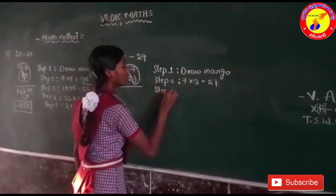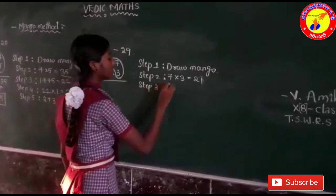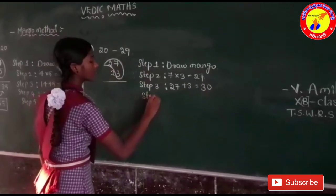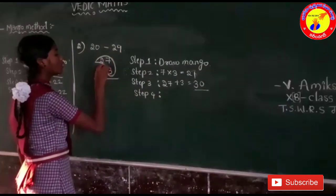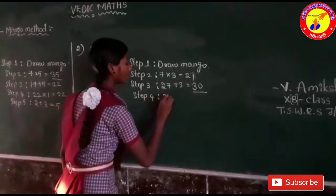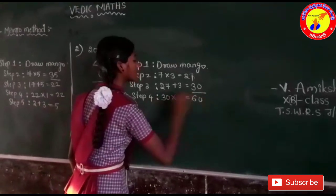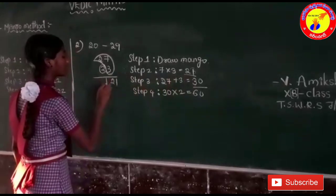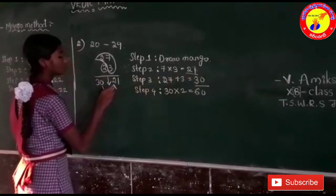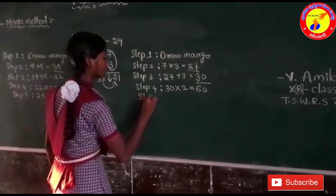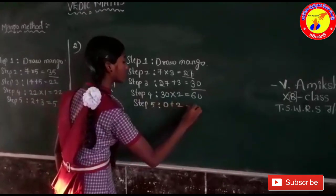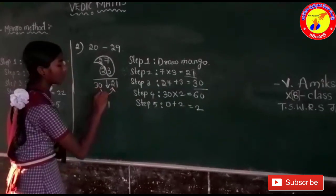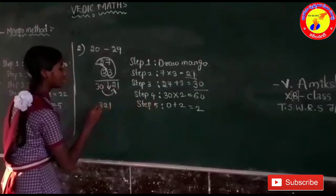In step 3, we have to add 27 and 3. 27 plus 3 is equal to 30. In step 4, we have to multiply 30 into 2, which is in the ones place. 30 into 2 is equal to 60. In step 5, we have to add these two middle numbers. 0 plus 2 is equal to 2. We write 3 and 1 as they are. So the answer is 621.